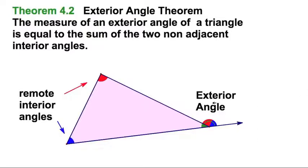They're remote because they're not touching this exterior angle. See, only the green one's touching there. The green is adjacent. So they're also called non-adjacent interior angles. And those angles are going to add up to 180.